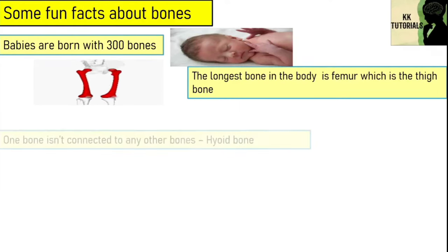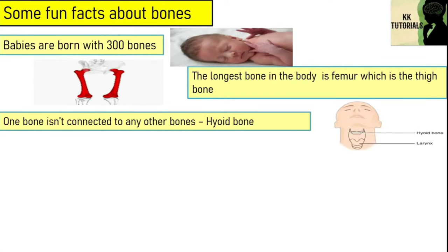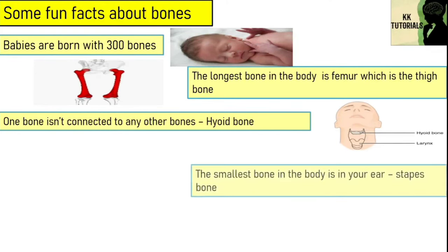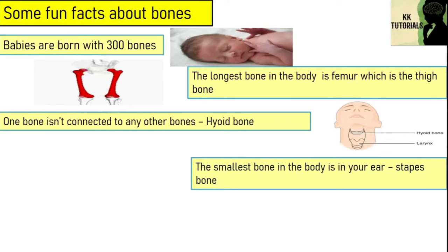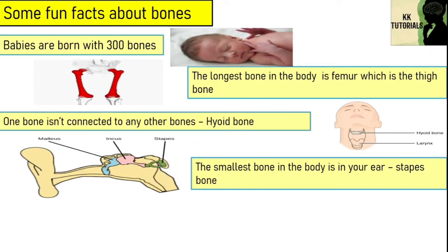One bone that is not attached to any other bone is the hyoid bone, which is in your throat. It is the only bone that doesn't connect to a joint and is responsible for holding your tongue in place. The smallest bone in the body is in your inner ear, sometimes called the stirrup because of its shape.